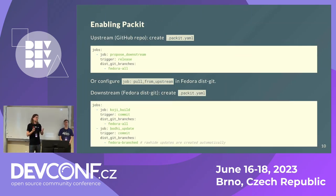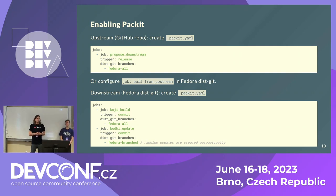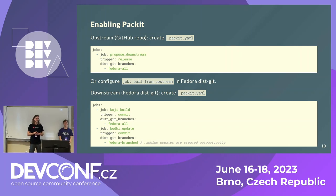For configuration, you create a Packit YAML in the upstream GitHub repository and configure the propose-downstream job. Another option is to create the Packit YAML in the Fedora dist-git and configure a job called pull-from-upstream instead. This is useful if you don't have commit access to the upstream project. You should in any case create the Packit YAML in Fedora dist-git because you need to define the other two jobs that do the Koji build and the Bodhi update.